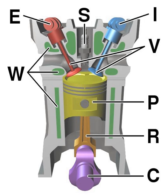An internal combustion engine is a heat engine where the combustion of a fuel occurs with an oxidizer in a combustion chamber that is an integral part of the working fluid flow circuit.